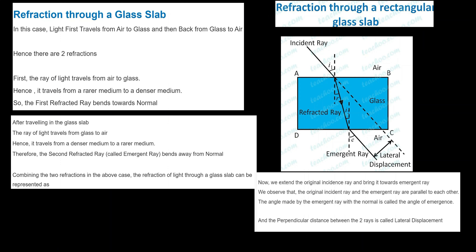In this case, light first travels from air to glass and then back from glass to air. Hence, there are two refractions we can observe here. In the first case, the light travels from rarer medium to denser medium — from air to glass. We call air a rarer medium because the particles are far from each other.